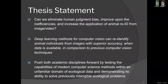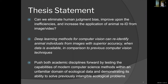So the question is: can we eliminate this human judgment bias? Can we improve upon the overall inefficiencies? And can we increase the application of animal re-ID from images and video? I set out to prove that deep learning methods for computer vision can re-identify animal individuals from images with superior accuracy when data is available, in comparison to previous computer vision techniques. By doing so, I push both academic disciplines forward by testing modern computer science methods within the unfamiliar domain of ecological data, and demonstrating its ability to solve previously intangible ecological problems.